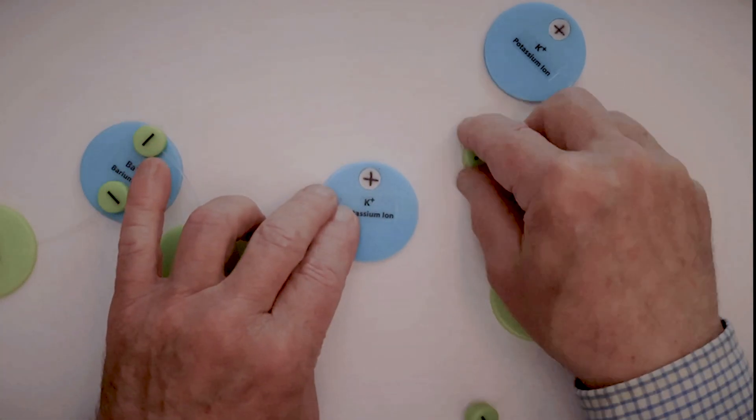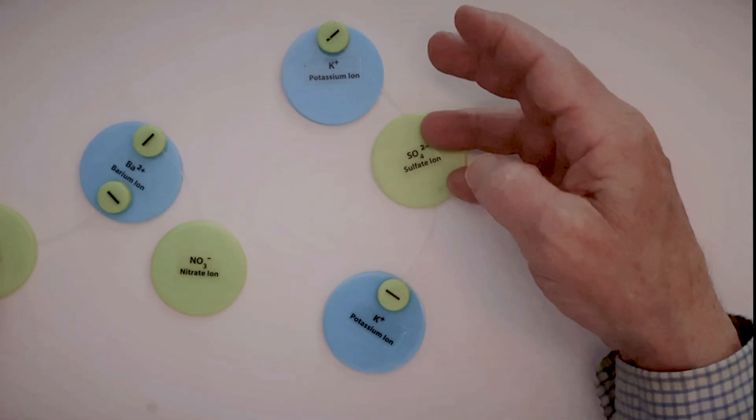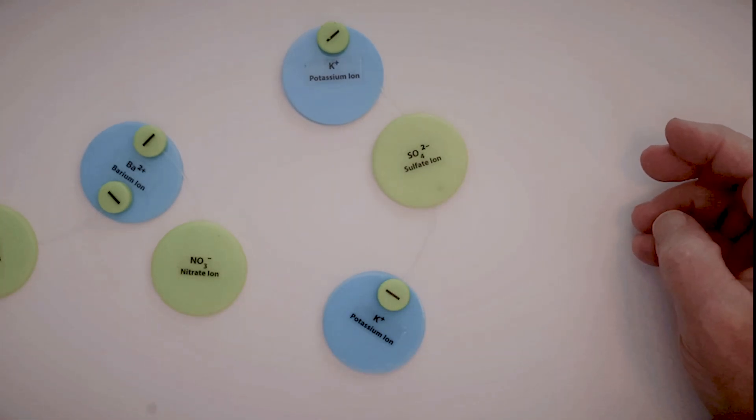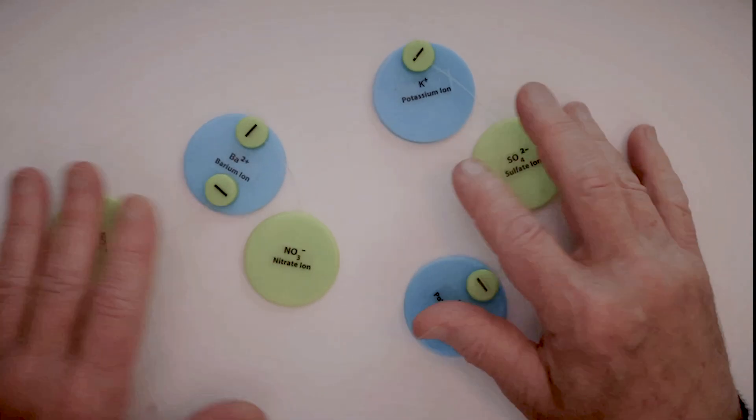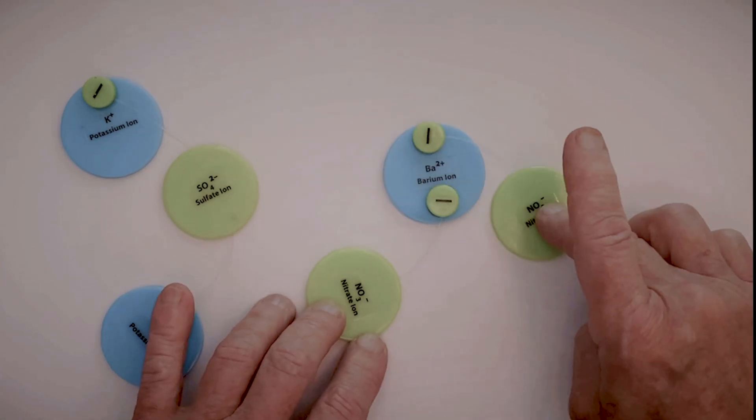And in a similar way, the sulfates hook onto the potassiums here, that's balanced. So now, we would end up with a balanced equation. We have one of the potassium sulfate with two potassium ions, and we have the barium nitrate.